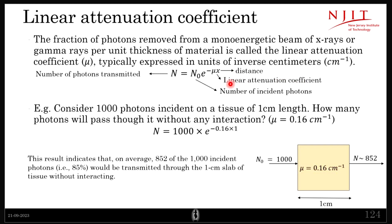The linear attenuation coefficient mu is different for different elements — bone has a different value from skin, and so on. Hence the number of photons transmitted differs for different regions of the body, causing increases or decreases in X-ray intensity. More photons reaching the detector produce a bright spot; fewer produce a dark spot. That is how the image is created.